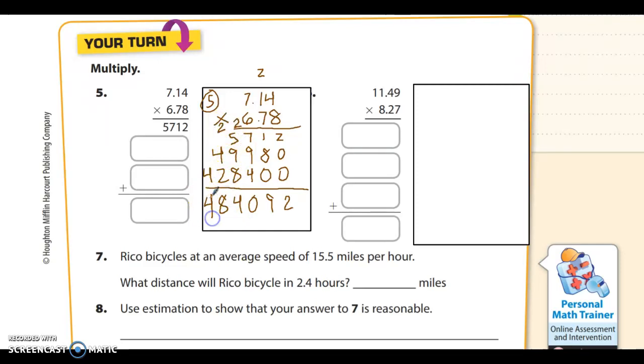And 4. And I'm going to count over 1, 2, 3, 4 places in the problem, which means 1, 2, 3, 4 places in the answer. So my answer is 48 and, the decimal means and, 4092 ten-thousandths.